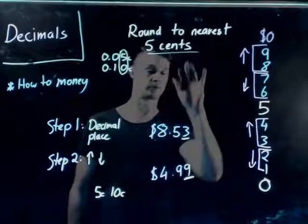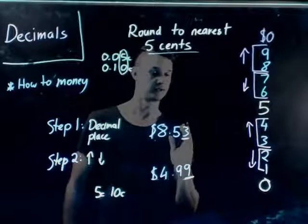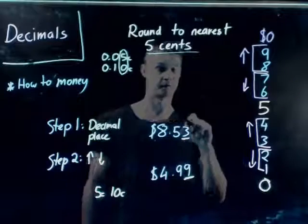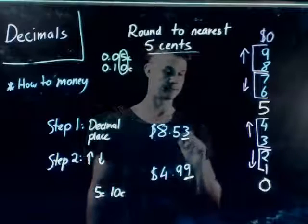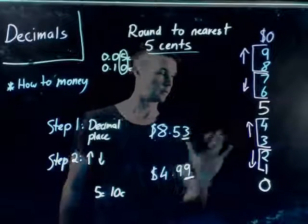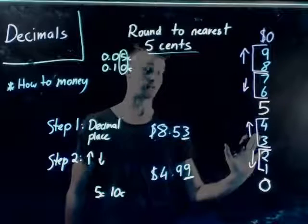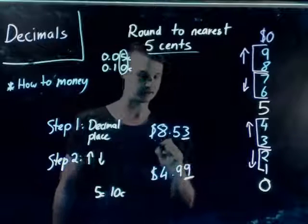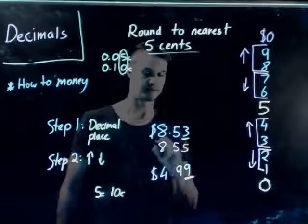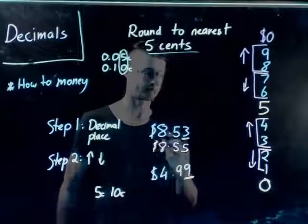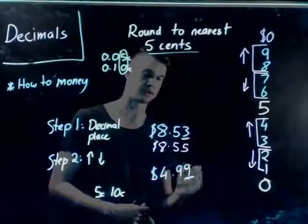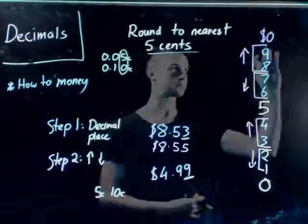So we should be able to answer this question. The question is eight dollars and fifty-three cents, rounded to the nearest five cents. We focus purely on the cents — we don't need to look back further. Looking at our chart, three needs to round up to the nearest five cents. So that's going to be eight dollars and fifty-five cents.